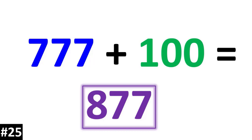As you can see, we can easily add any three-digit number by 100 by first identifying the hundreds digit, going up by 1, and then letting the other numbers stay the same.